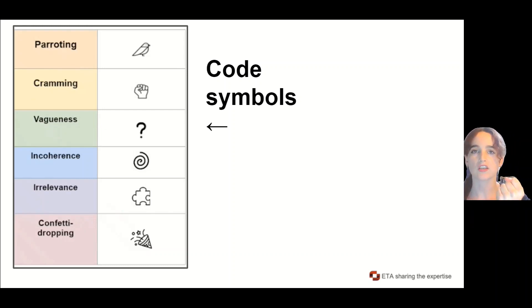Cramming is like a fist, like cramming too much information together. Vagueness is a question mark. Incoherence is a swirl, so when phrases or clauses or sentences are just not making any sense.